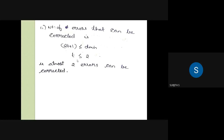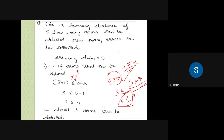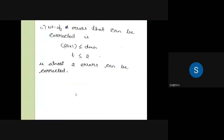That's a lot of logic, so consider how to detect in this case. You can detect up to four errors with this Hamming distance, or correct up to two errors — those are the two different ways to interpret the result.